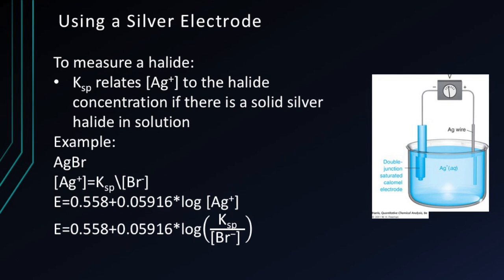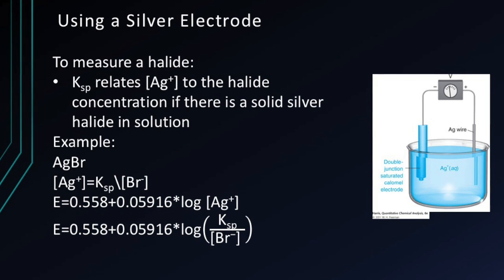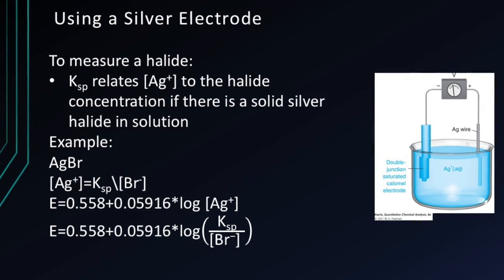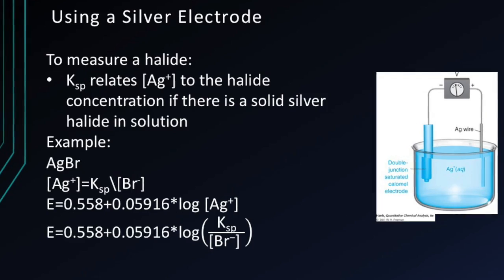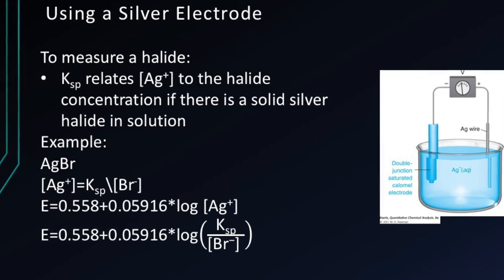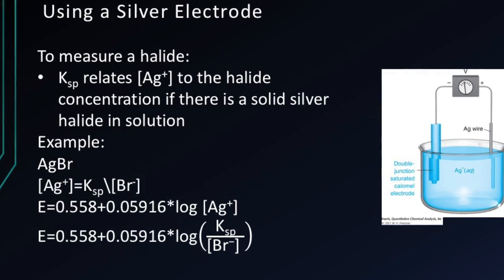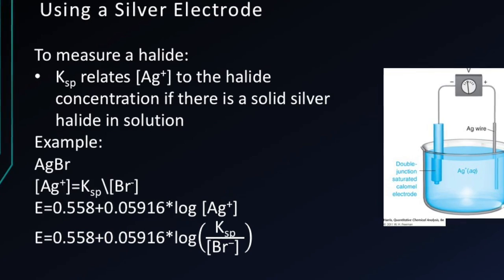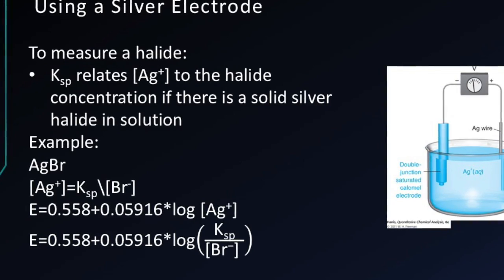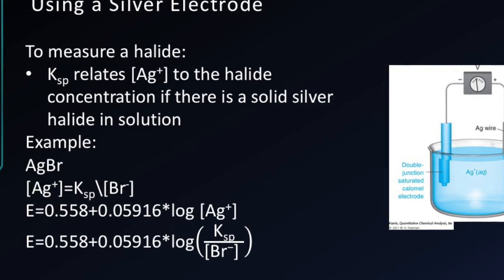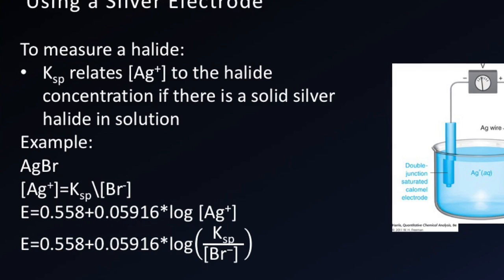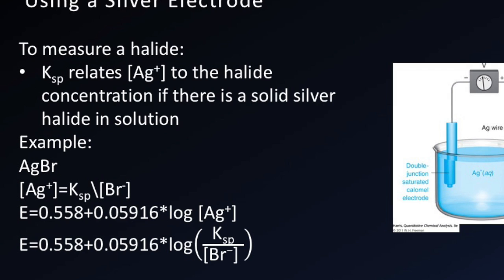The silver electrode can also be used to measure a halide. The Ksp relates the concentration of silver+ to the halide concentration if there is a solid silver halide in the solution. Using silver bromide as an example: if you determine the cell potential — for example, 0.558 volts — you can plug that into the Nernst equation. Where the log of the silver+ concentration would go, you substitute Ksp divided by the bromide concentration and solve for the bromide concentration.